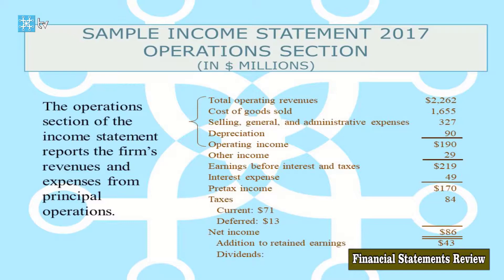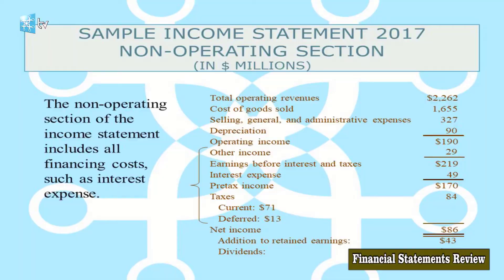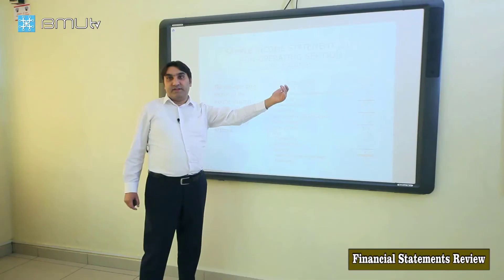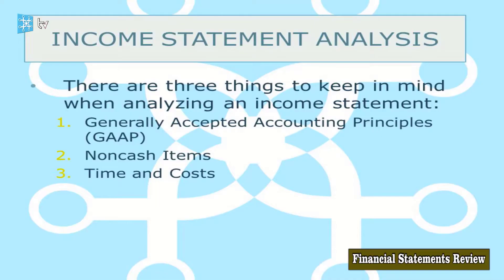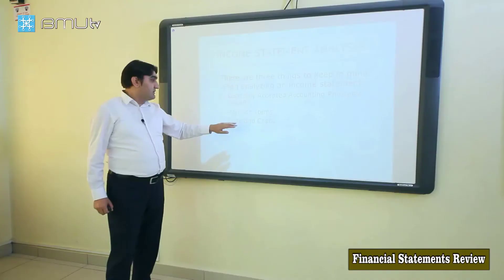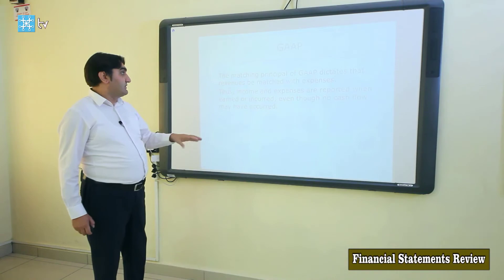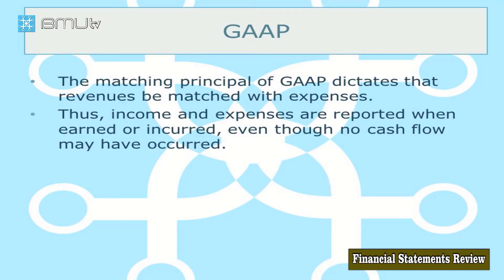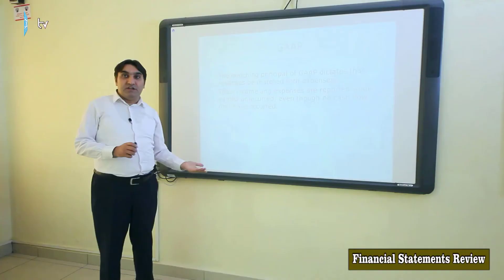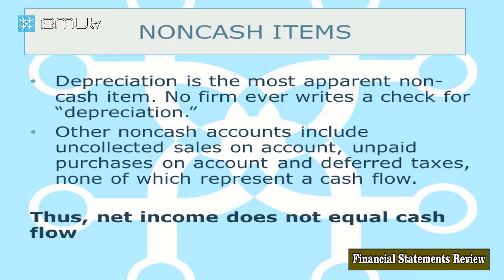The operating section of the income statement covers the company's core operations, while non-operating sections include income from financial or investing activities, and interest expense is due to financing. When analyzing the income statement, we need to pay attention to three topics: what accounting standard is used, what non-cash items the company has, and the time and cost considerations. Accounting standards are important because reporting some items may change from standard to standard.